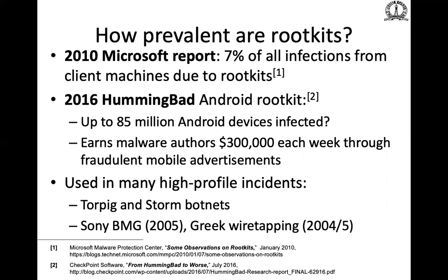A phone infected by a rootkit is especially dangerous: the attacker can track GPS location even if you disable it, record voice calls, activate the camera, and intercept OTPs — all stealthily. Other high-profile rootkit incidents include wiretapping cases in Greece, botnets in the late 2000s, and Sony installing rootkits on end-user devices.